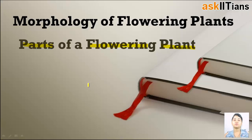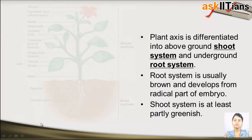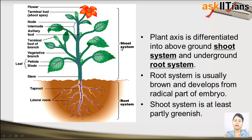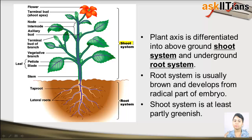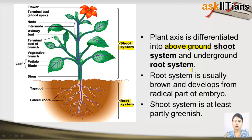Before entering into the morphology of a flowering plant, we should know what are the parts that come under a flowering plant. You can see here a diagram of a flowering plant in which a plant axis is differentiated into two parts: the shoot system and the root system. The shoot system is the one which is above the ground. The plant axis is differentiated into shoot and root. Shoot is always above the ground and root is always under the ground. Root system is usually brown in color.